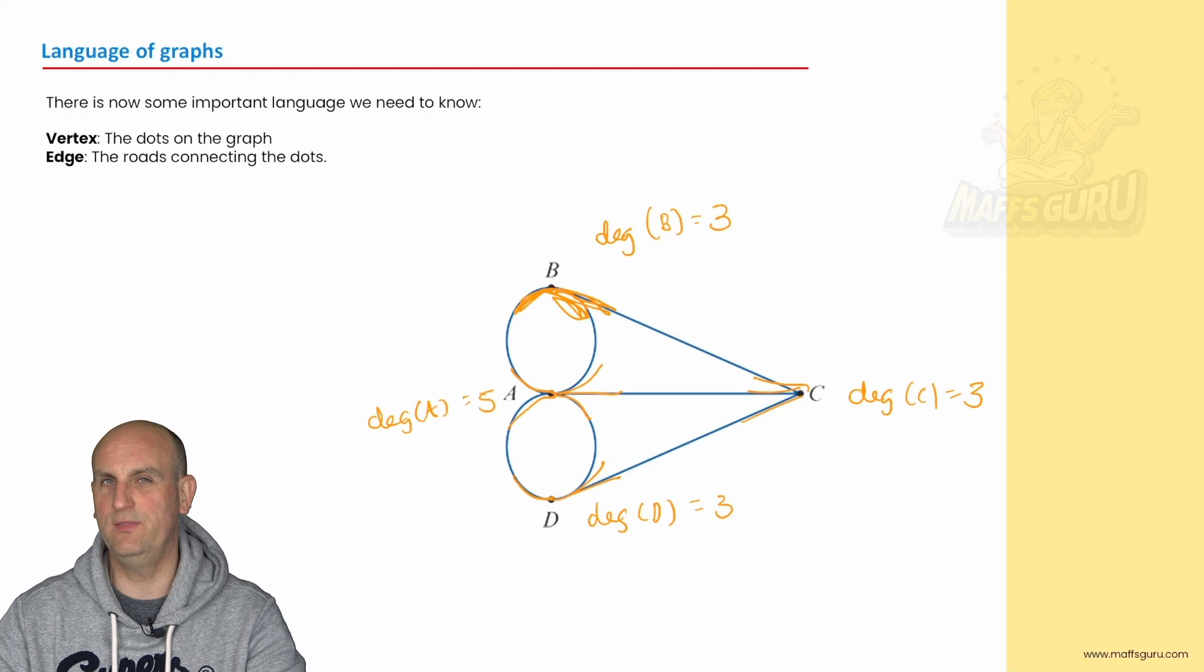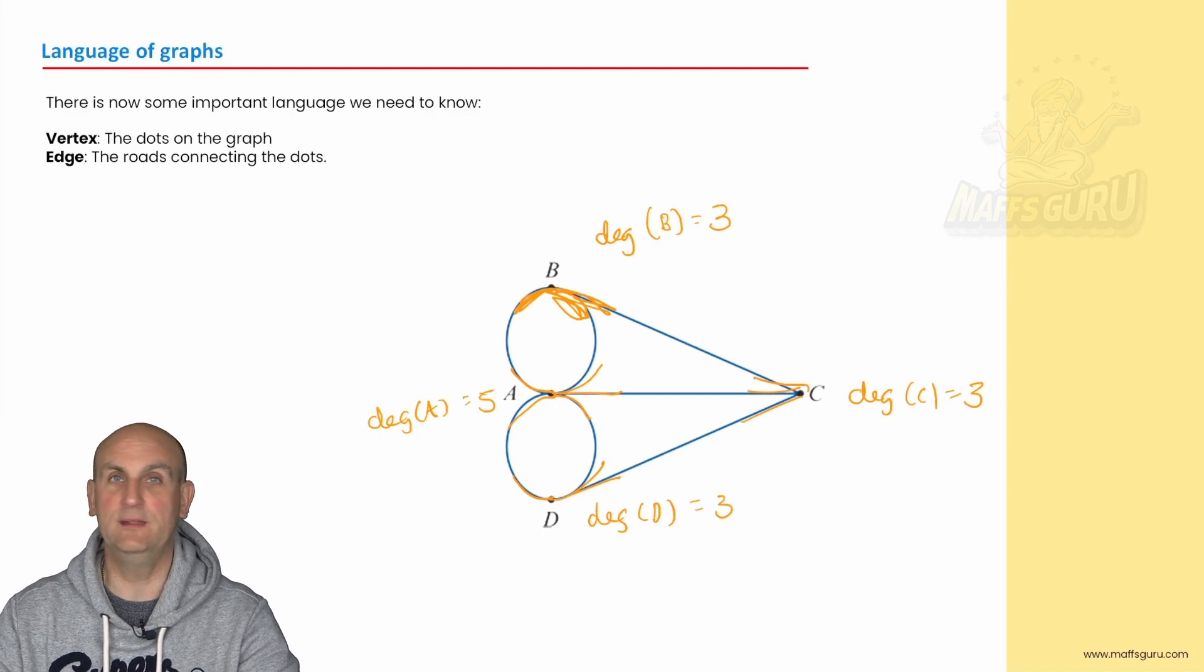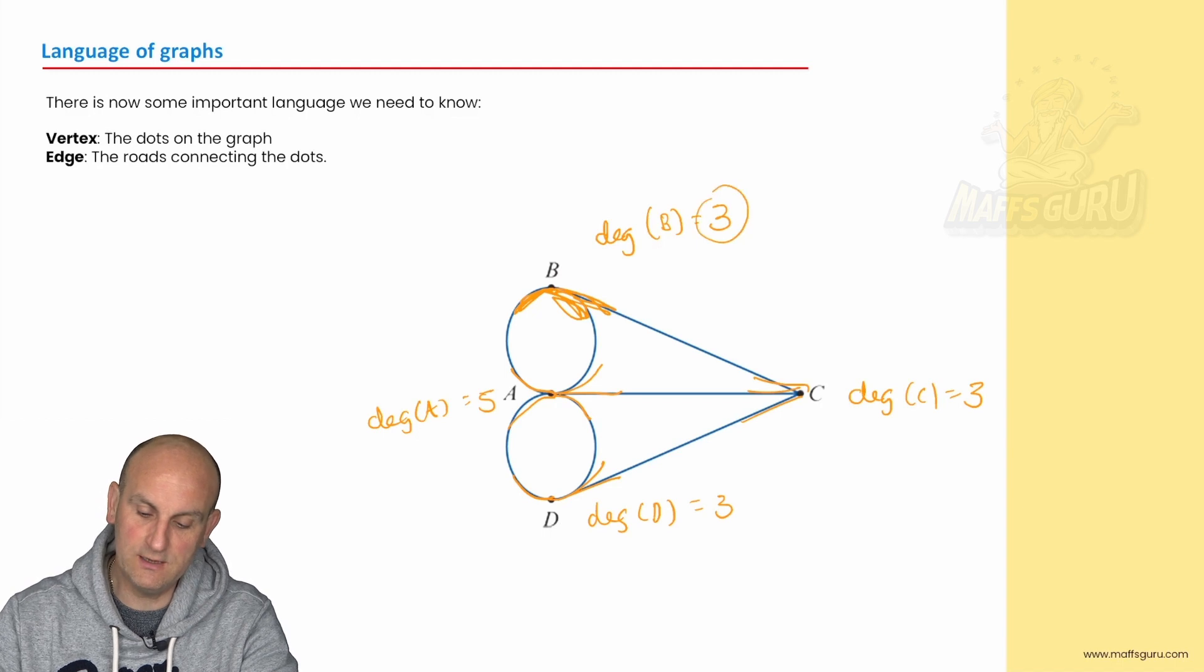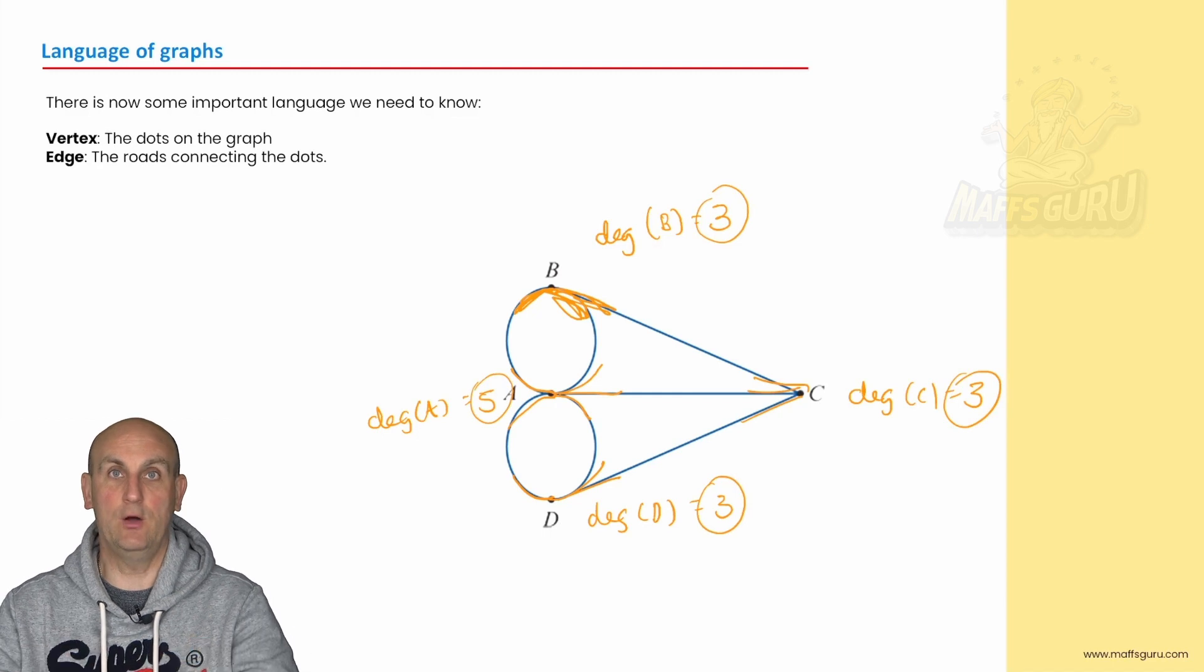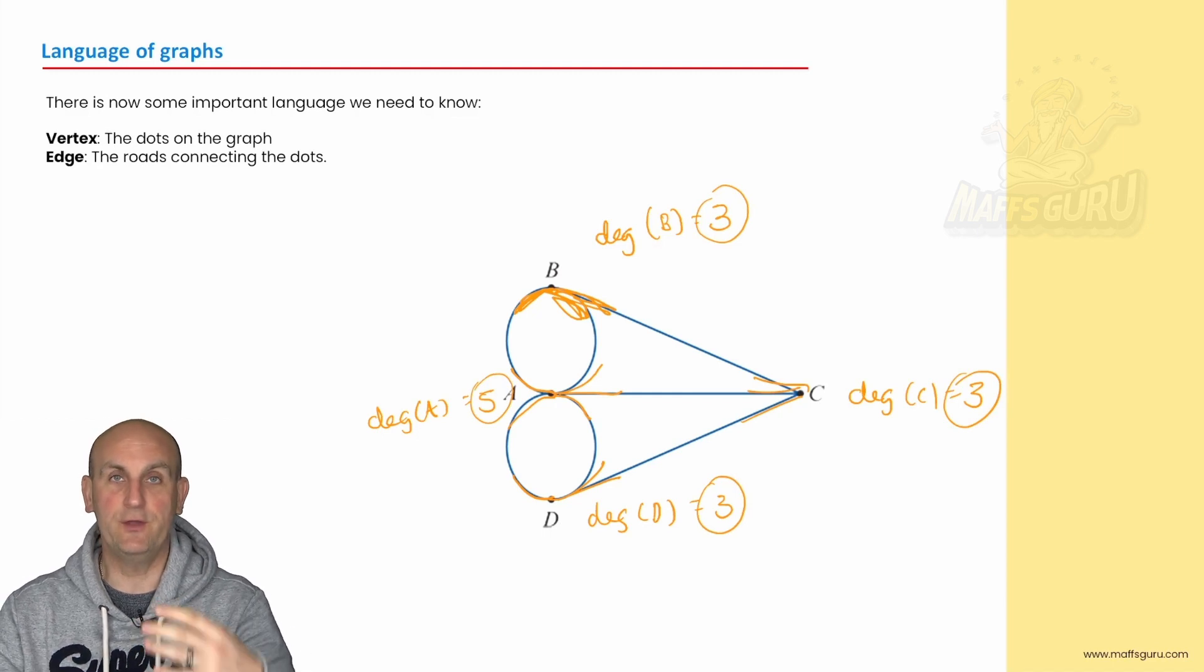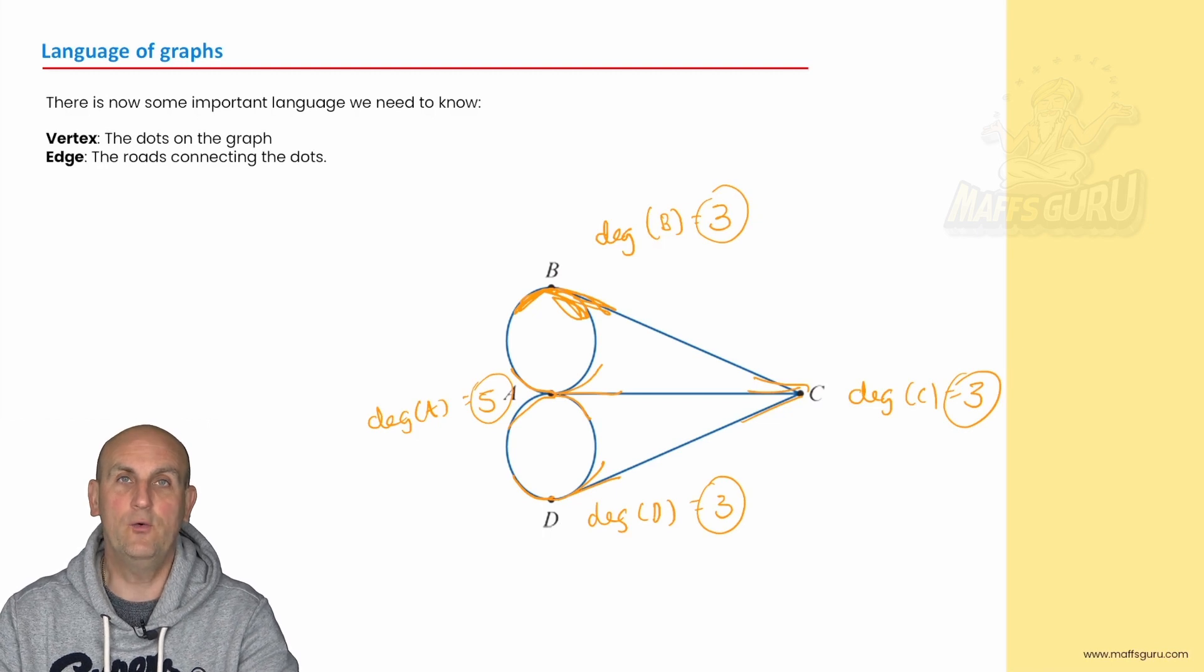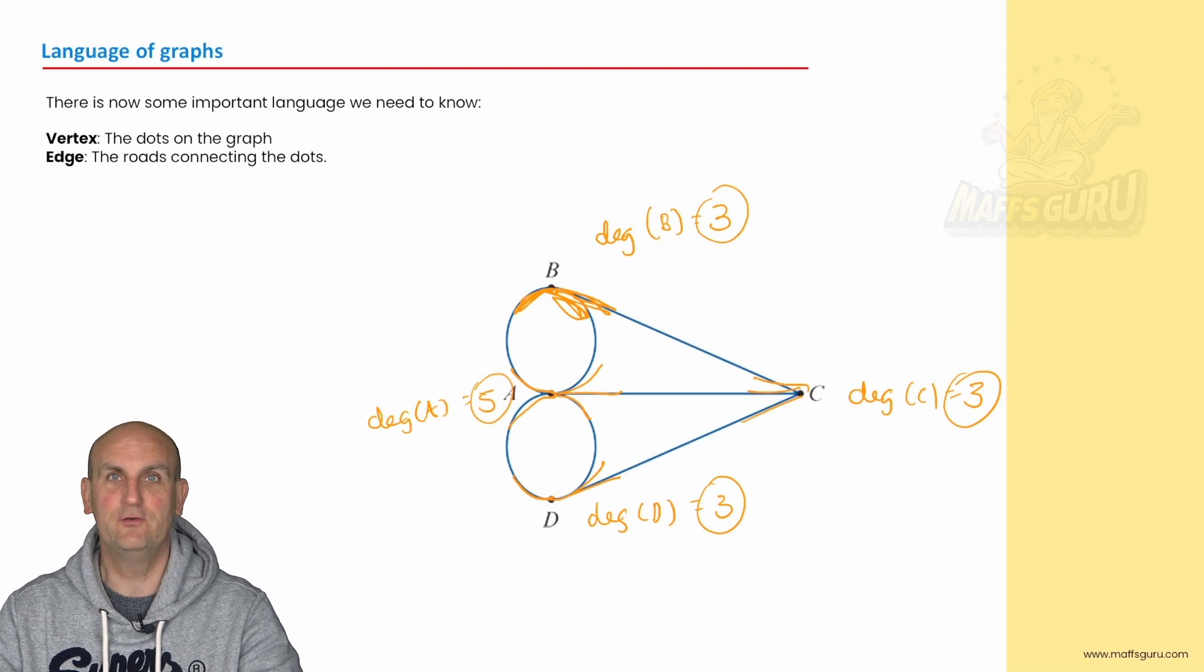And then he went well hold on a moment they're all odd numbers and by that I mean there were one, three, five, seven, nine. Those are your odd numbers. And he noticed that that was a three, that was a three, that was a three and that was a five. And when he went away and did a lot more research into this he found that for those particular diagrams or graphs in this situation where all the vertices had an odd degree meant that you actually couldn't traverse around it.